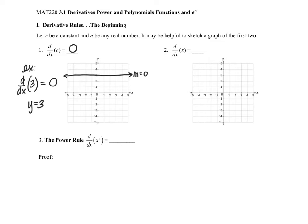We can generalize this and say that the derivative of any constant is going to be zero, because a constant function is a horizontal line with a slope of zero. For our second rule, the derivative of x: if we analyze the function y equals x, that's just a line with a y-intercept of zero and a slope of positive one. Since this is linear, the slope remains the same everywhere, and the slope of this line is always one. Therefore the derivative of x will just be one. Next we're going to look at the power rule.